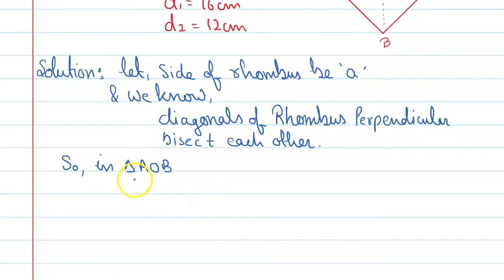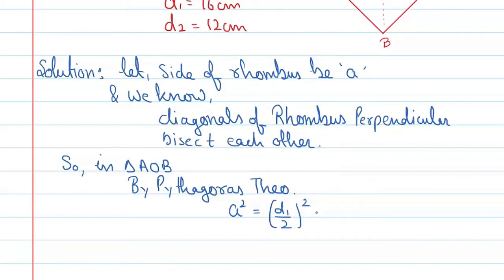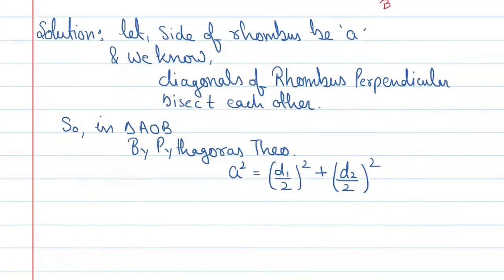In triangle AOB, by Pythagoras theorem, we can say: a² = (d1/2)² + (d2/2)².